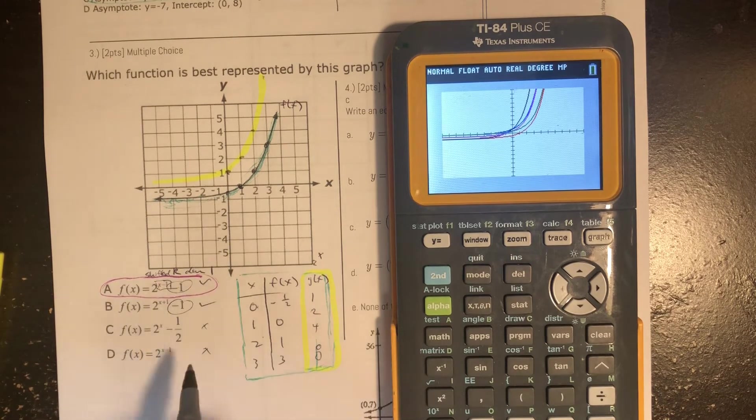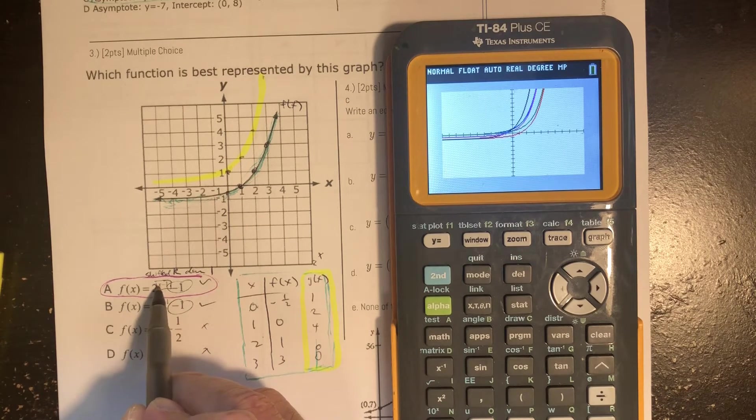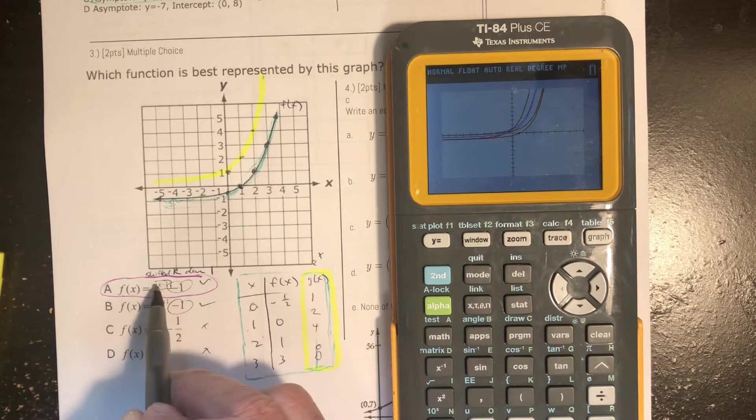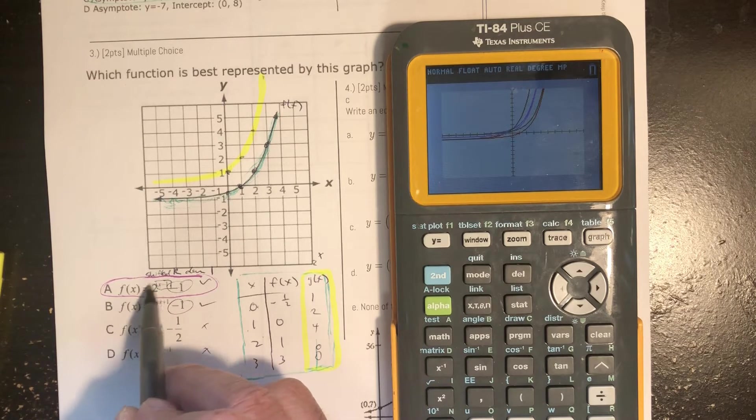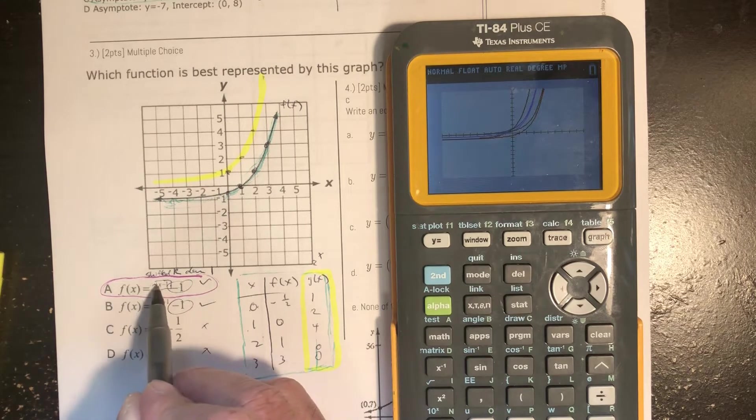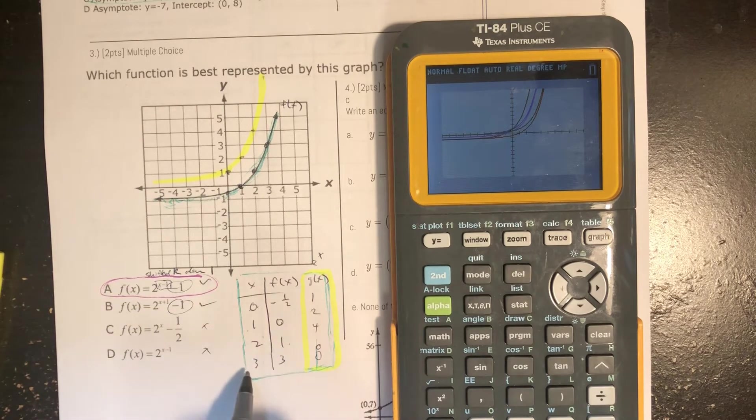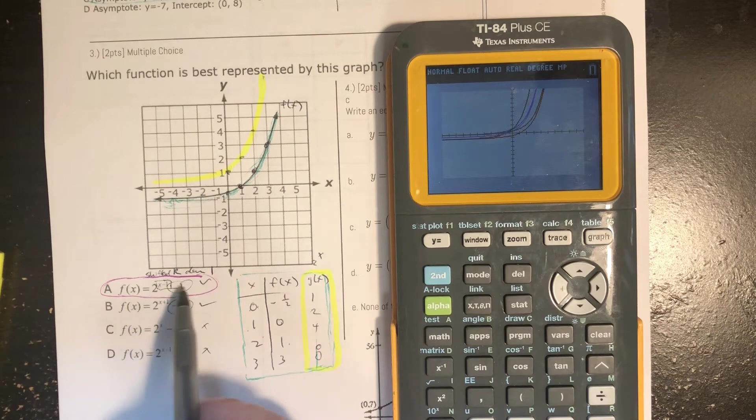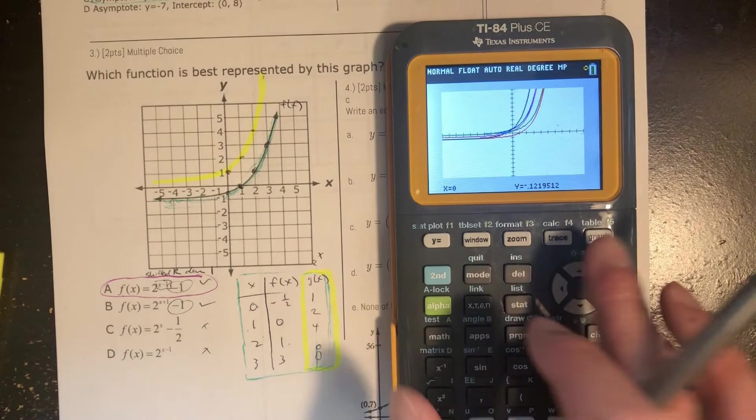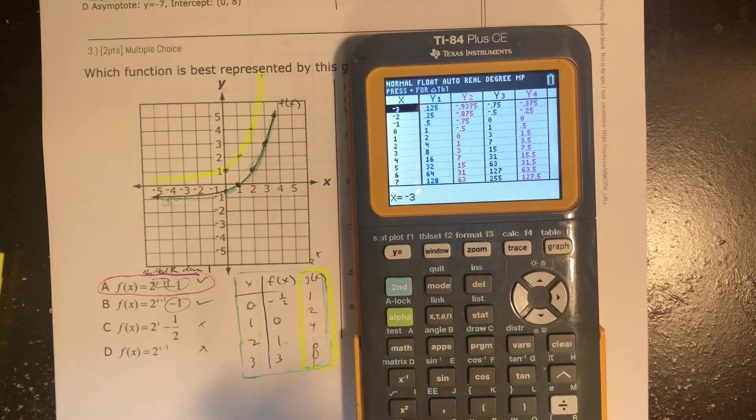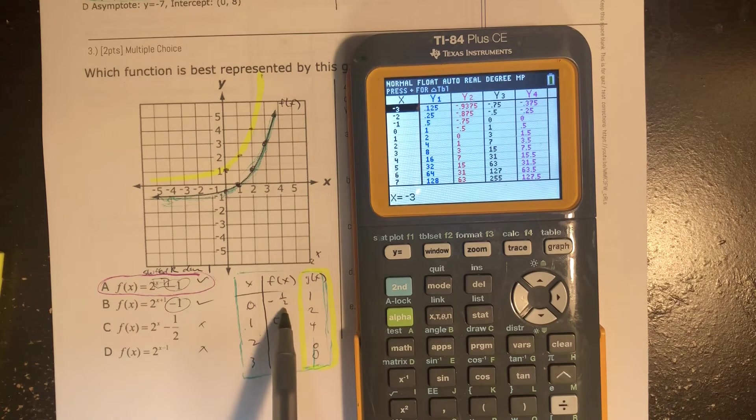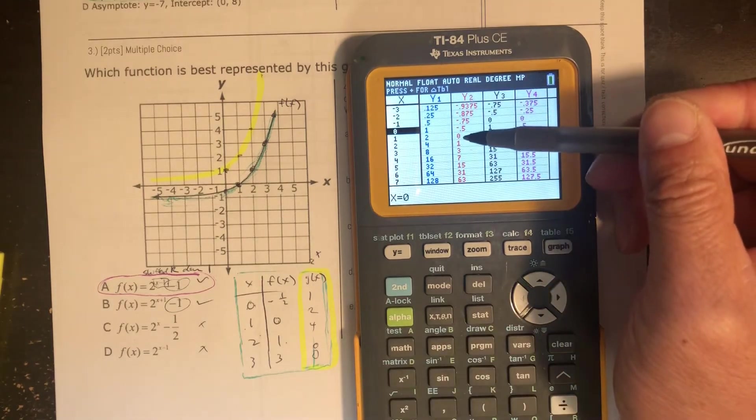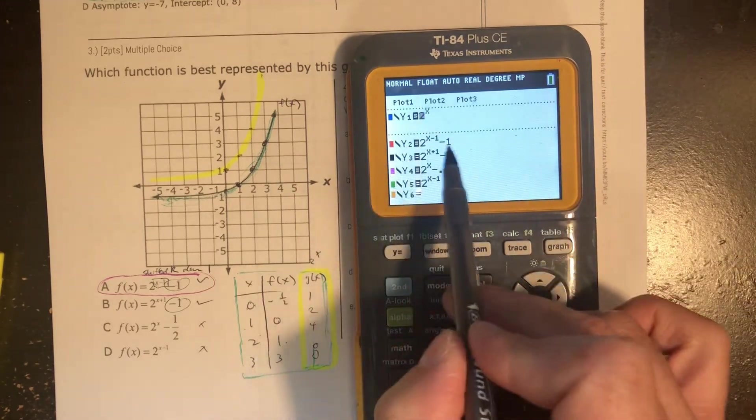And then you can even test the values. If you put in 0 here, 0 minus 1 is negative 1, 2 to the negative 1 power is 1 half, 1 half minus 1 equals negative 1 half. 1 minus 1 is 0, 2 to the 0 power is 1, 1 minus 1 is 0. 2 minus 1 is 1, 2 to the 1 power is 2, 2 minus 1 is 1. And then 3 minus 1 gives you 2, 2 to the second power equals 4, 4 minus 1 equals 3. And in this table of values, you can find the graph that actually matches the one that you have. 0, negative 1 half. 1, 0. 2, 1. And 3, 3. So that would be the red choice, which it would be A.